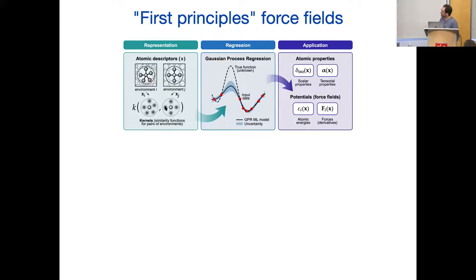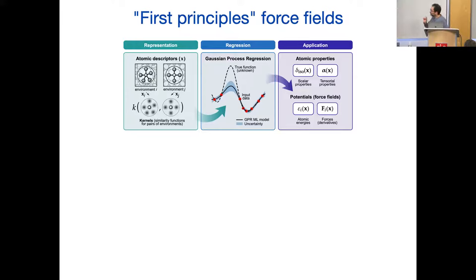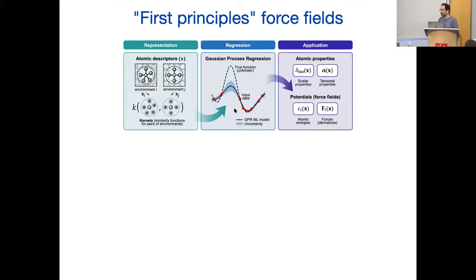Once you've described your neighbors in some way and can compare two neighborhoods, you can do regression — linear regression or kernel regression. We do these things in high dimension, and although people have been doing regression for a long time, how to do it in very high dimension so it doesn't overfit is where we pick up ideas from machine learning methods.